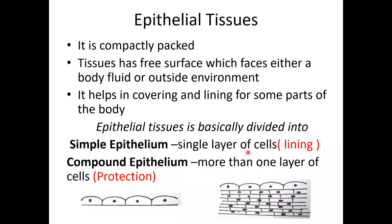Simple epithelium is a single layer of cells used as lining for organs. Compound epithelium, multi-layered, is used for protection. Epithelium tissue cells can be in a flat manner — Squamous epithelium. Cells in a cuboid shape are Cuboidal epithelium. Cells in a tall manner are Columnar epithelium. Some tissue cells have cilia, making Ciliated epithelium.